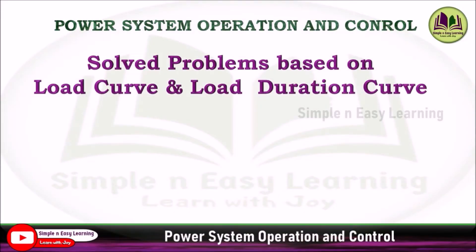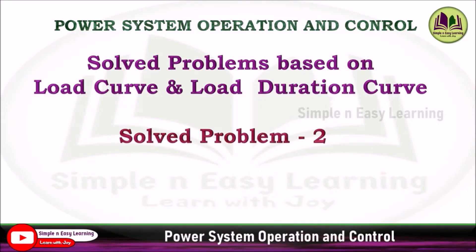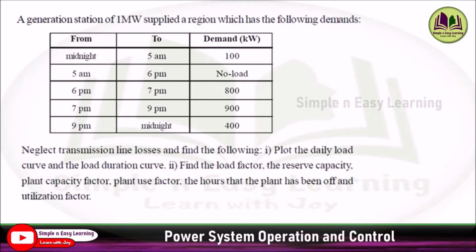Solved problems based on load curve and load duration curve. Solved problem 2. A generating station of 1 megawatt supplied a region which has the following demands.